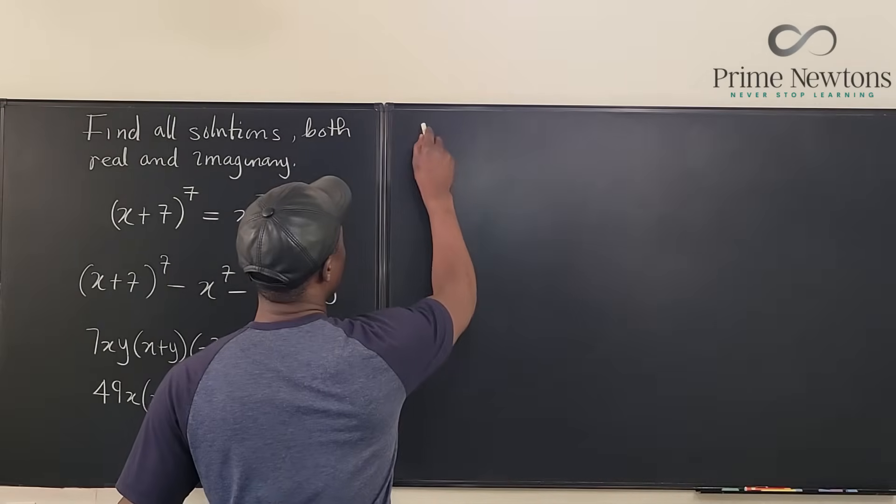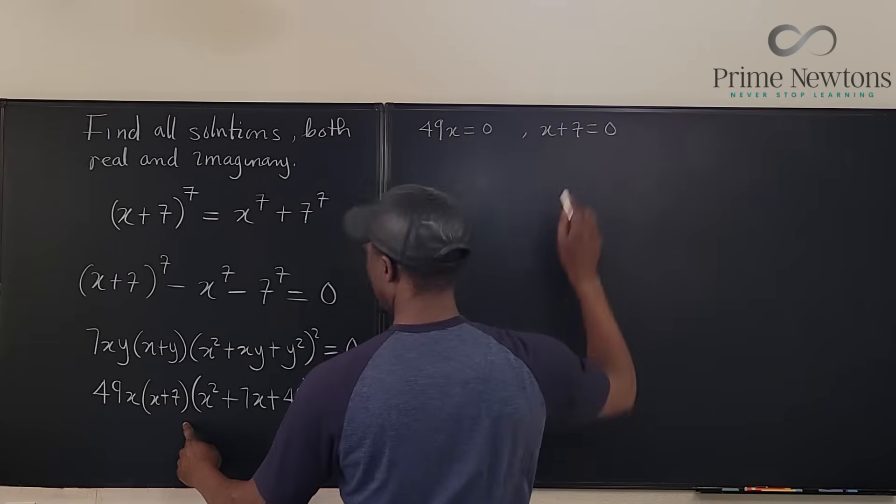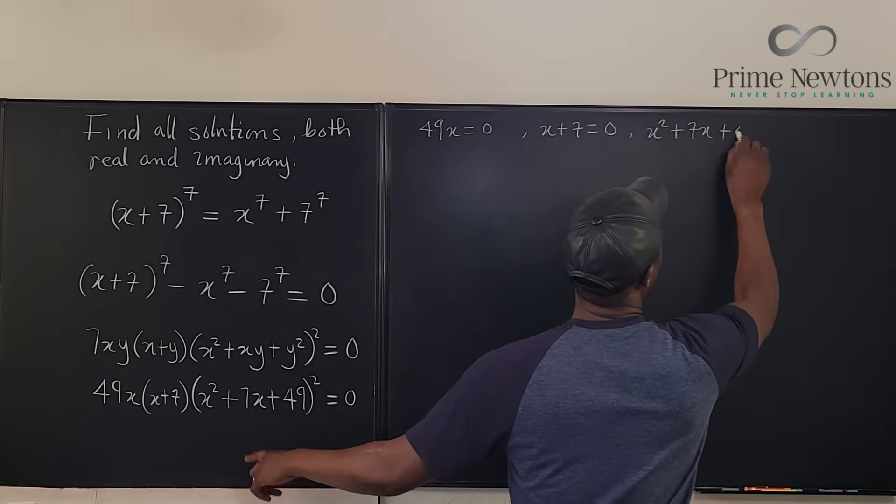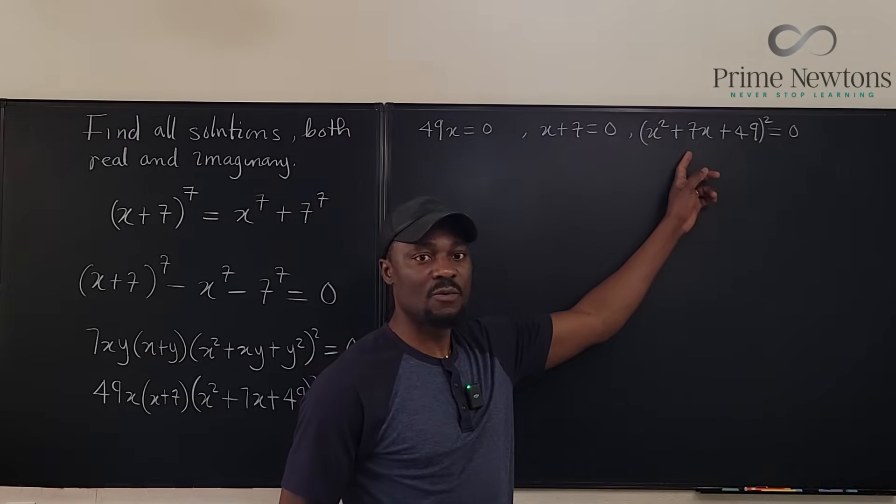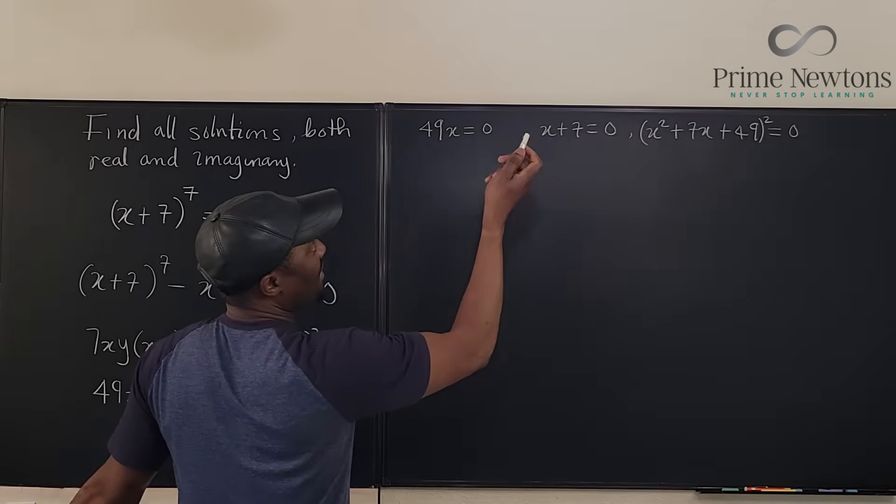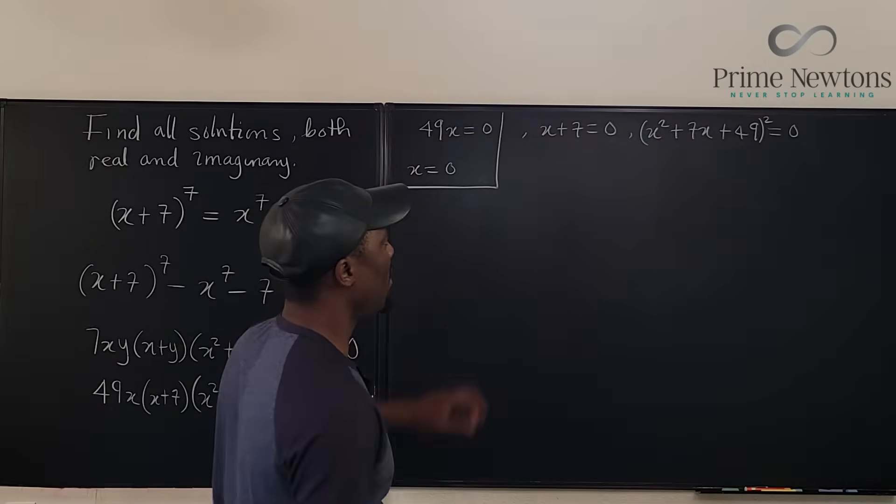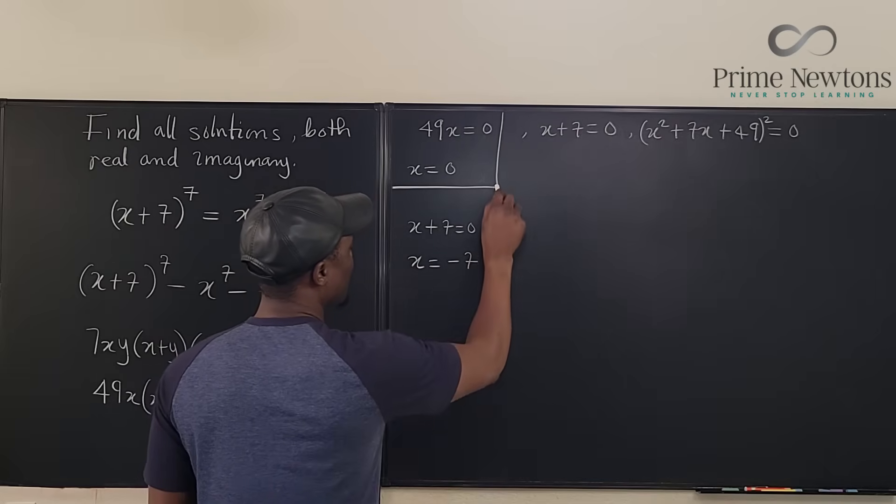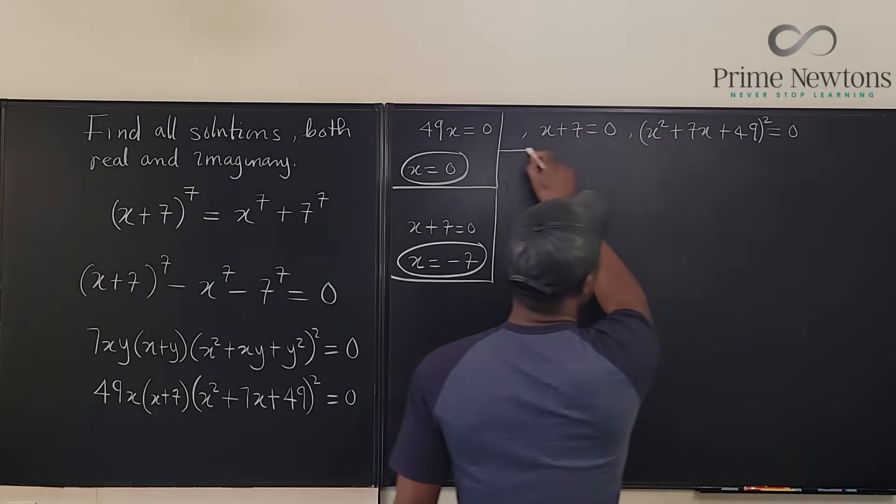This is 49X times X plus seven. And this is going to be X^2 + 7X + 49, everything squared is equal to zero. So we have 49X equals zero. We have X + 7 equals zero. And we have (X^2 + 7X + 49)^2 is equal to zero. Whatever answer we get here will have a multiplicity of two because this happens twice.